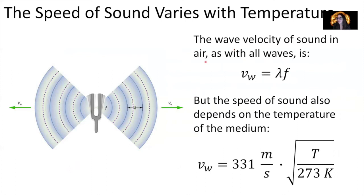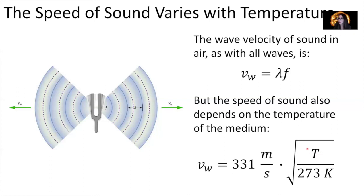The wave velocity of sound in air — the speed of sound — equals its wavelength times its frequency. But the speed of sound also depends on the temperature of the medium. You can find the speed of sound in air using: 331 m/s × √(T / 273 K), where T is the temperature in Kelvin. For room temperature air at about 24°C, you would use T = 24 + 273 Kelvin inside the square root.